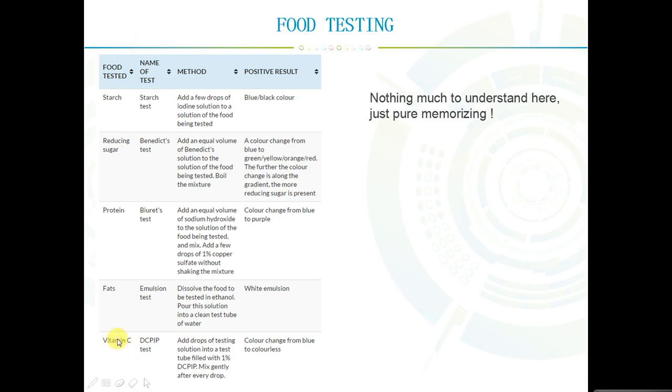Lastly is vitamin C, where this test is called the DCPIP test. You add drops of the testing solution into a test tube filled with 1% DCPIP and mix it gently after every drop. If you see a color change from blue to colorless, then you've got vitamin C in your solution.